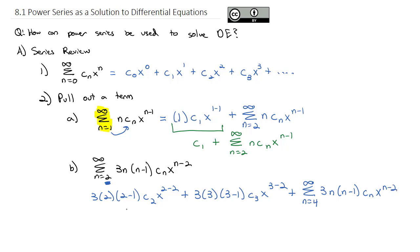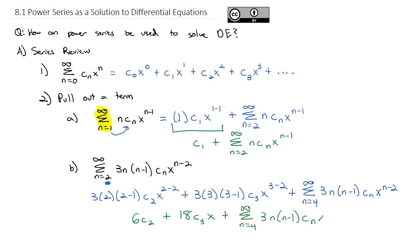Cleaning up: 3·2·1 = 6, so we get 6c₂·x⁰ = 6c₂, and 3·3·2 = 18, giving 18c₃·x, plus the sum from n = 4 to infinity of 3n(n−1)·c_n·x^(n−2). That's our first key technique — the ability to pull out a term from a series, effectively changing the opening hour of the factory.